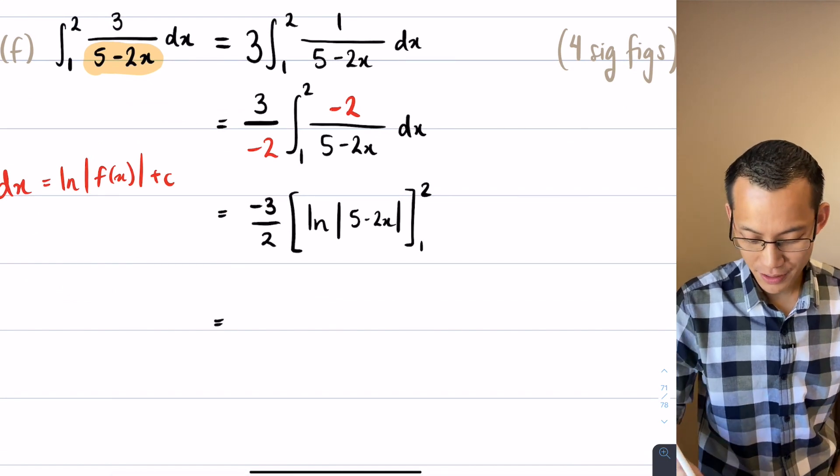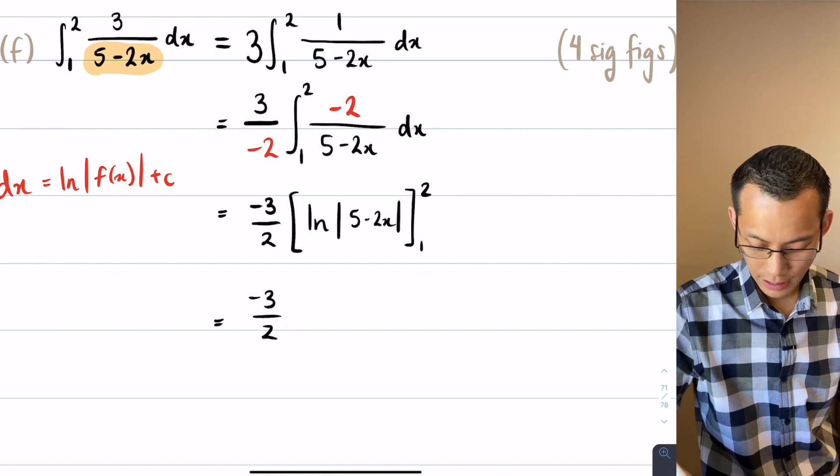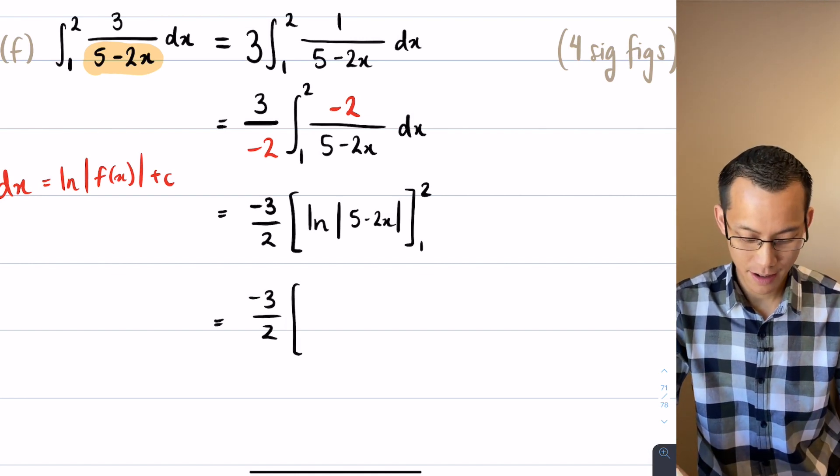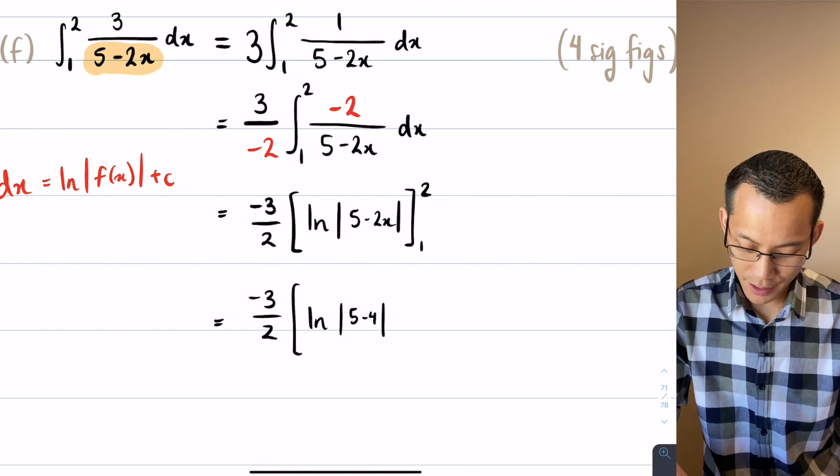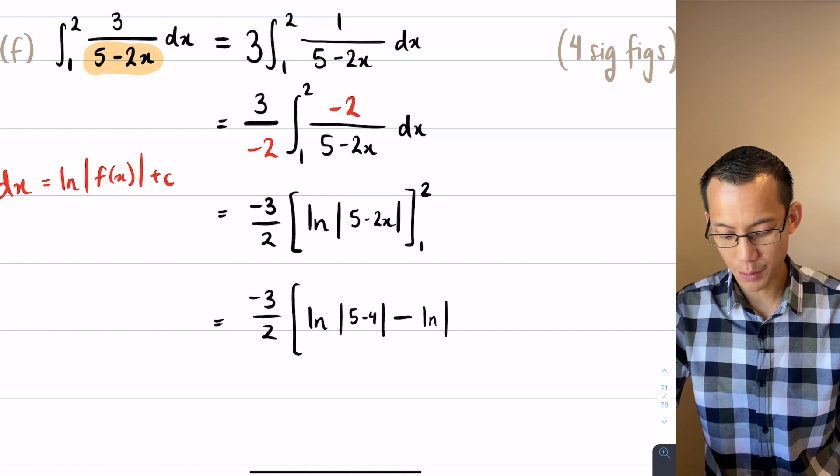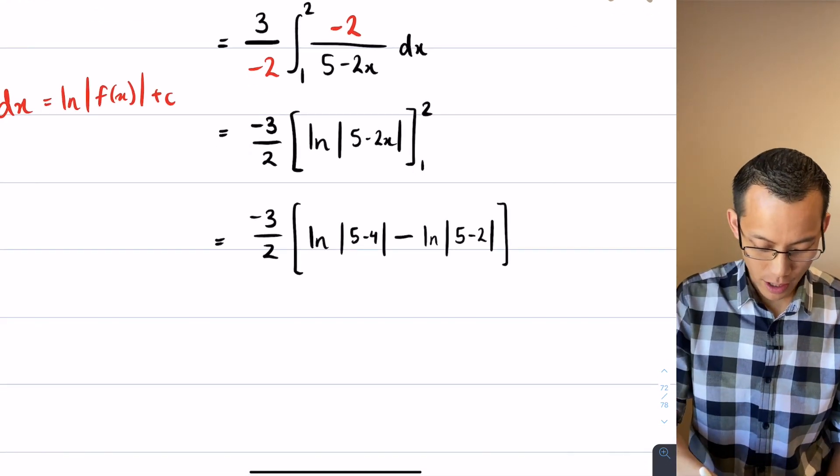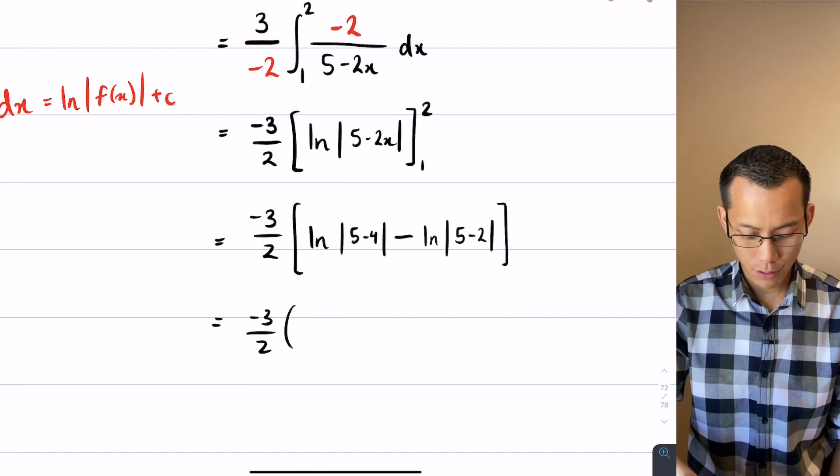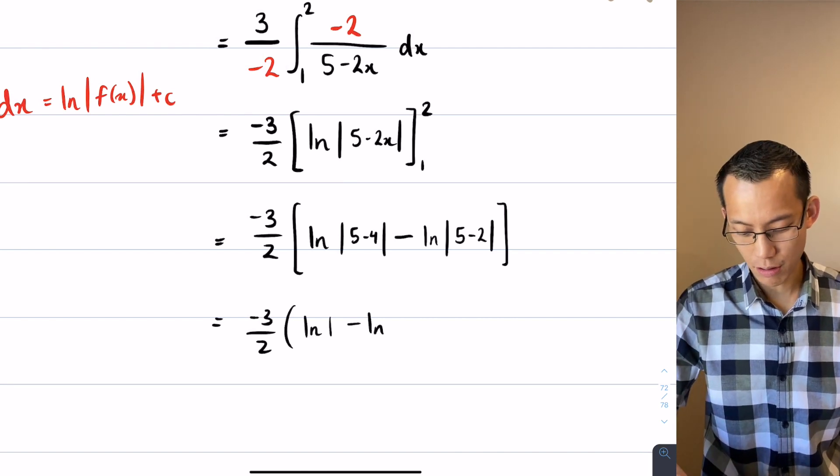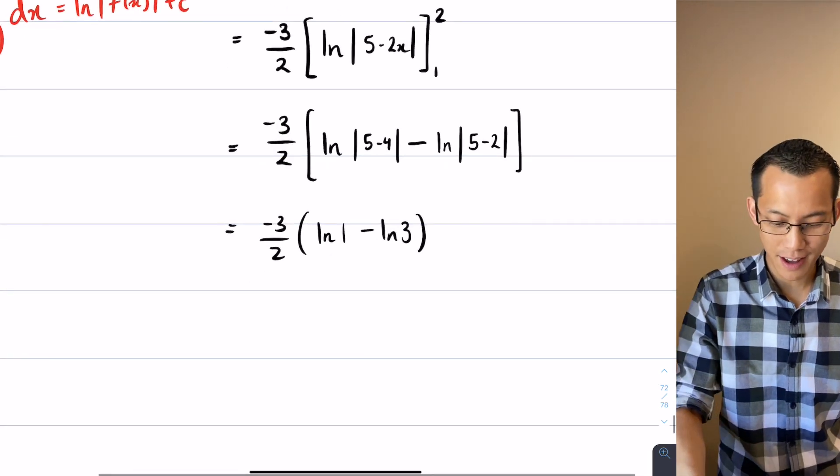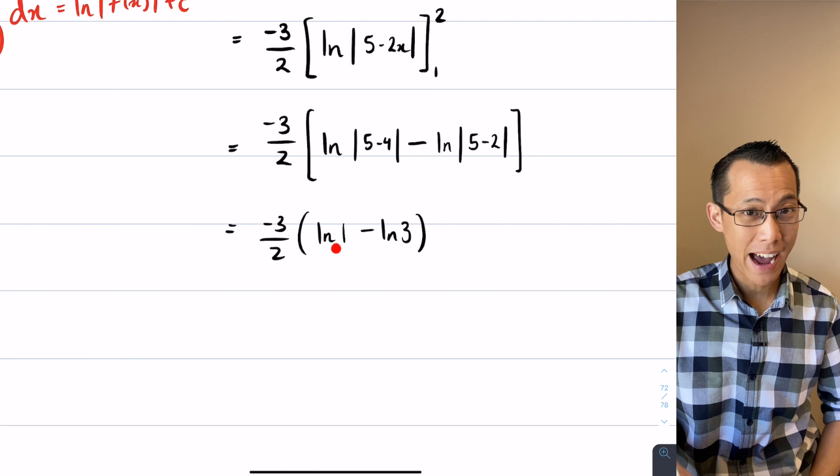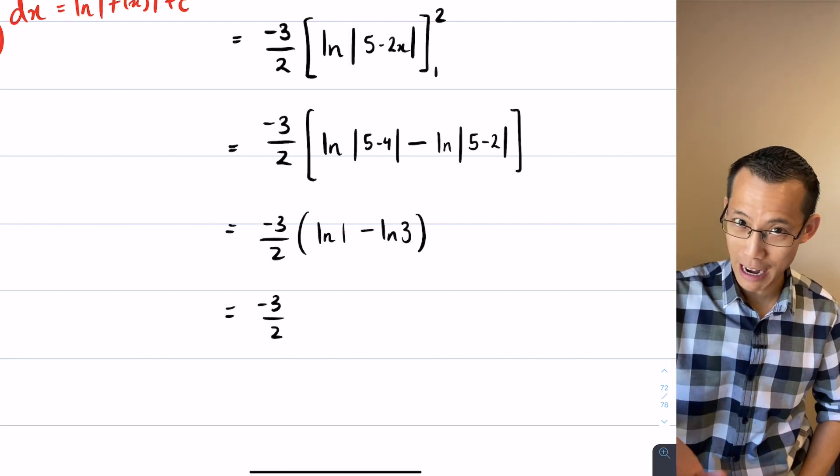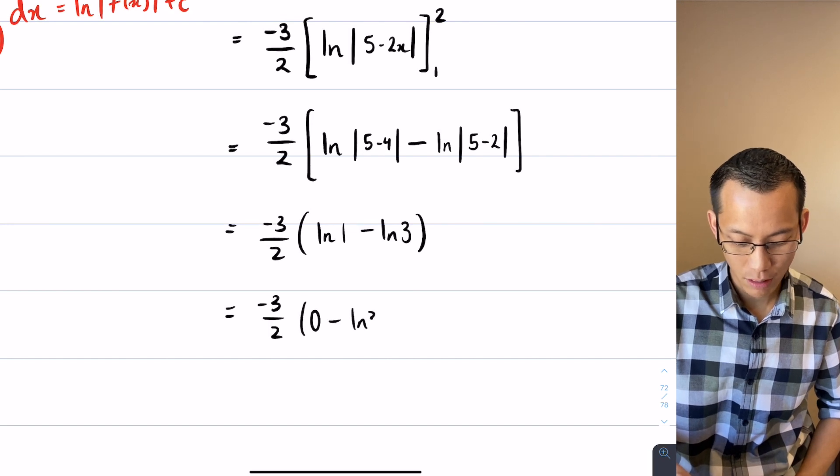I'm going to now do the evaluation, so there's the negative 3 over 2 still hanging out the front. Log of the absolute value of 5 minus 2 lots of 2 is 4, so that's 5 take away 4. I'm going to subtract the lower bound, so this is now log of the absolute value of 5 take away 2 lots of 1 is 2. Let's see what I can do here—this is negative 3 on 2 at the front, and then log of 5 minus 4 is log of 1, and log of 5 minus 2 is log of 3. Now remember, this natural log of 1—in fact the log of any base of 1—is that power that if you raise that power you'll get 1. That power can only be 0.